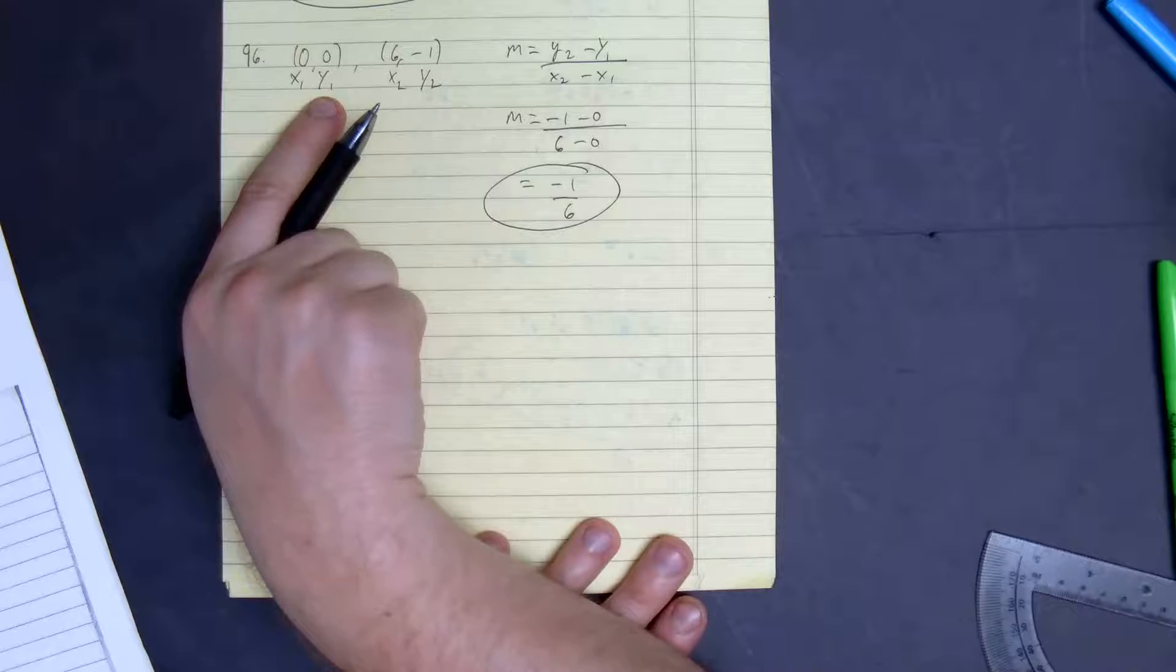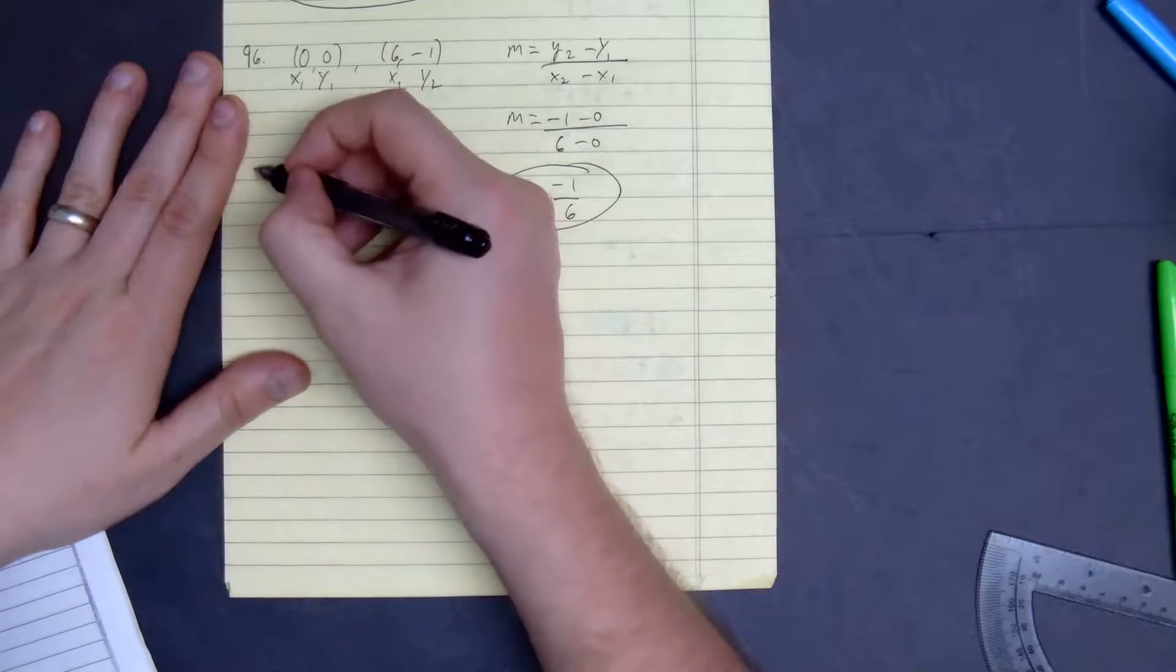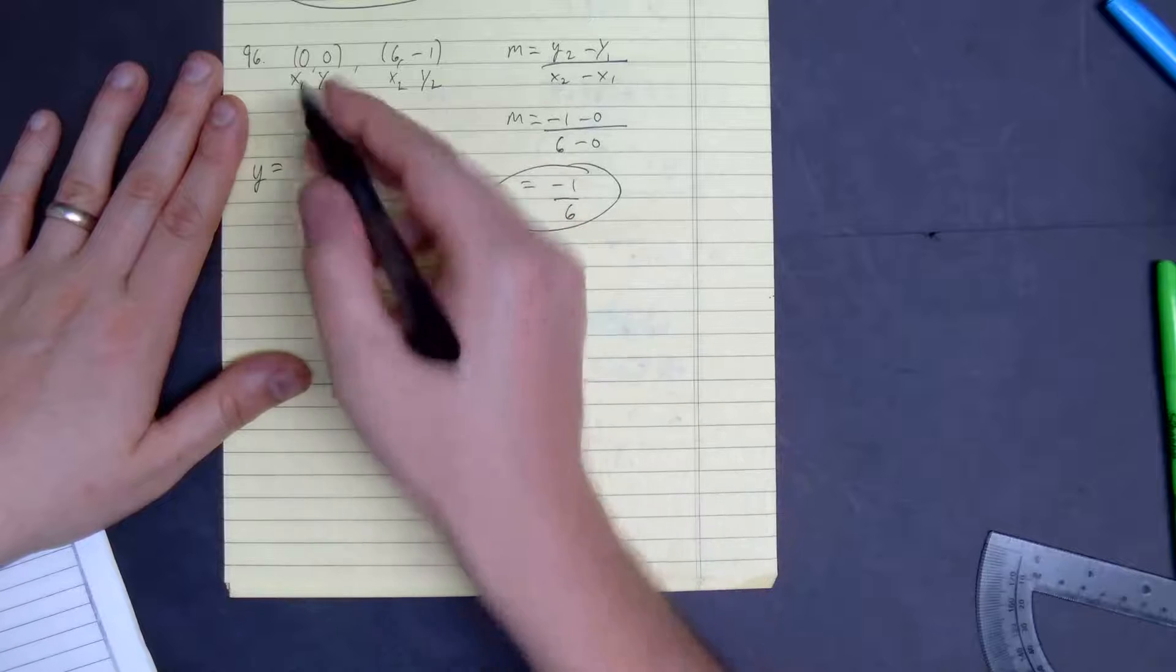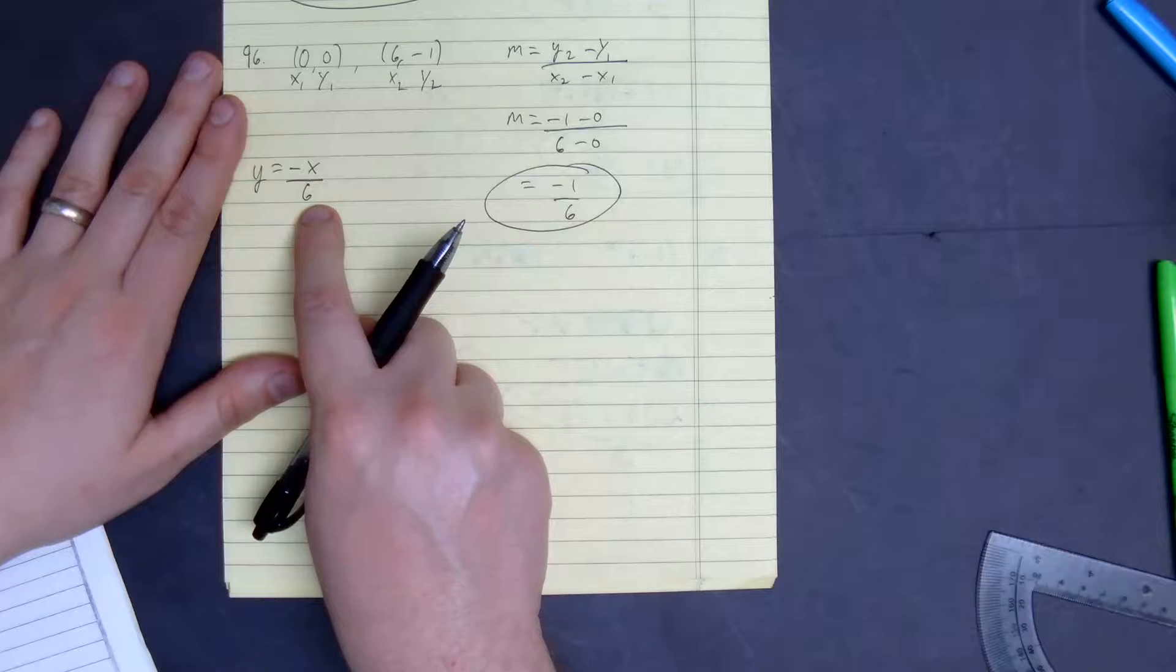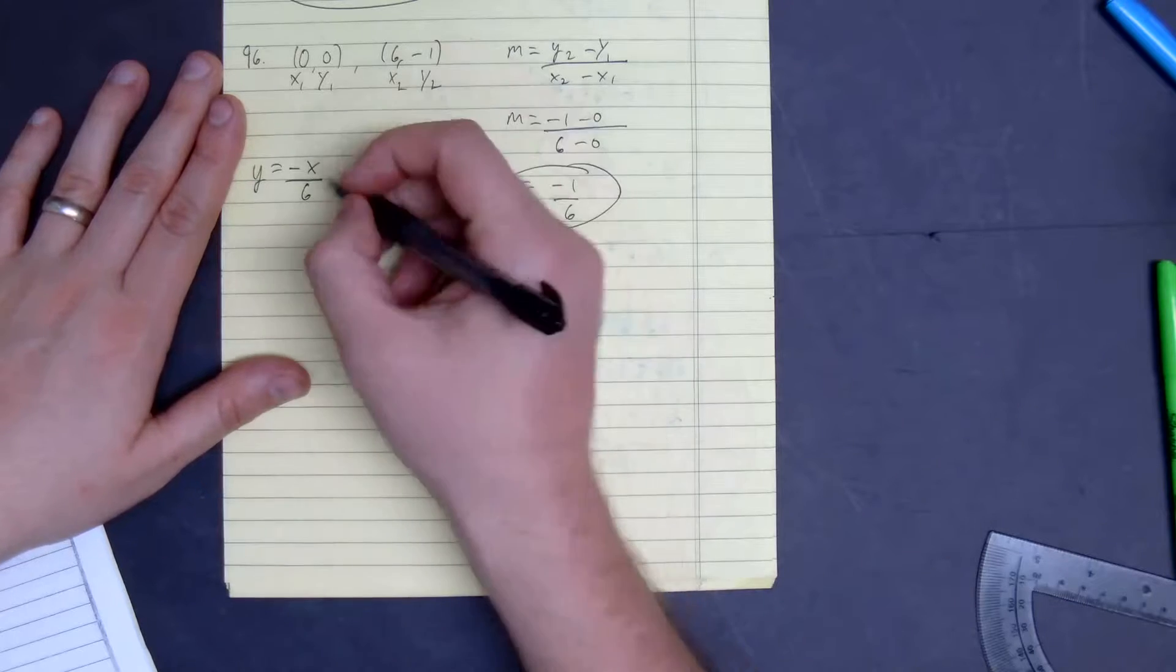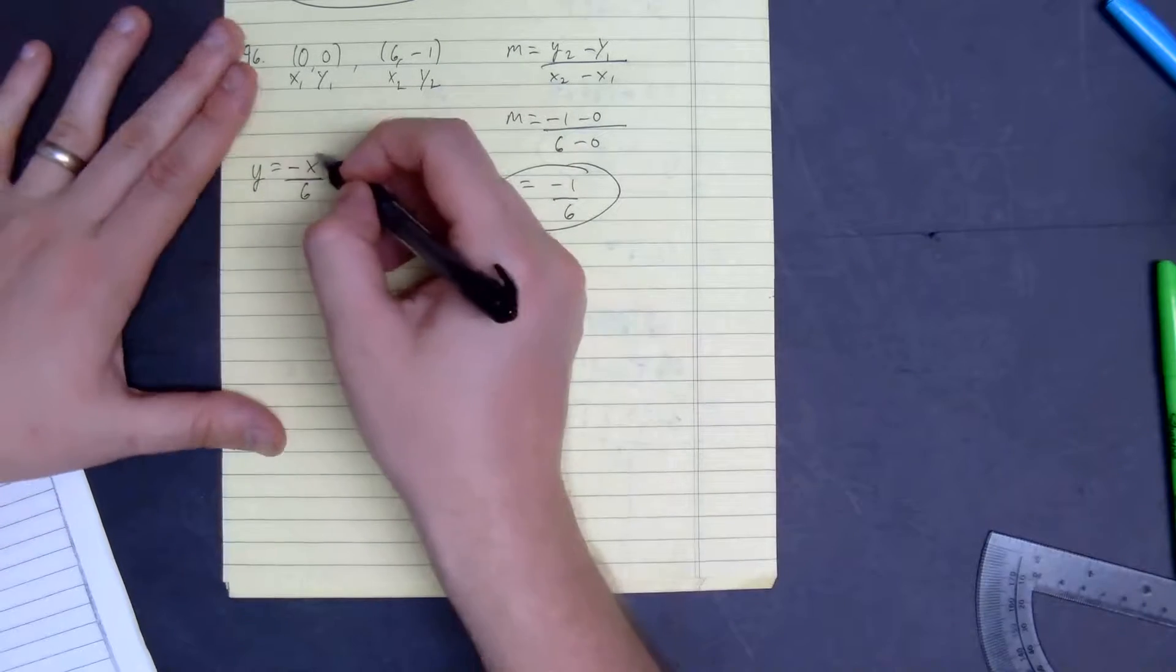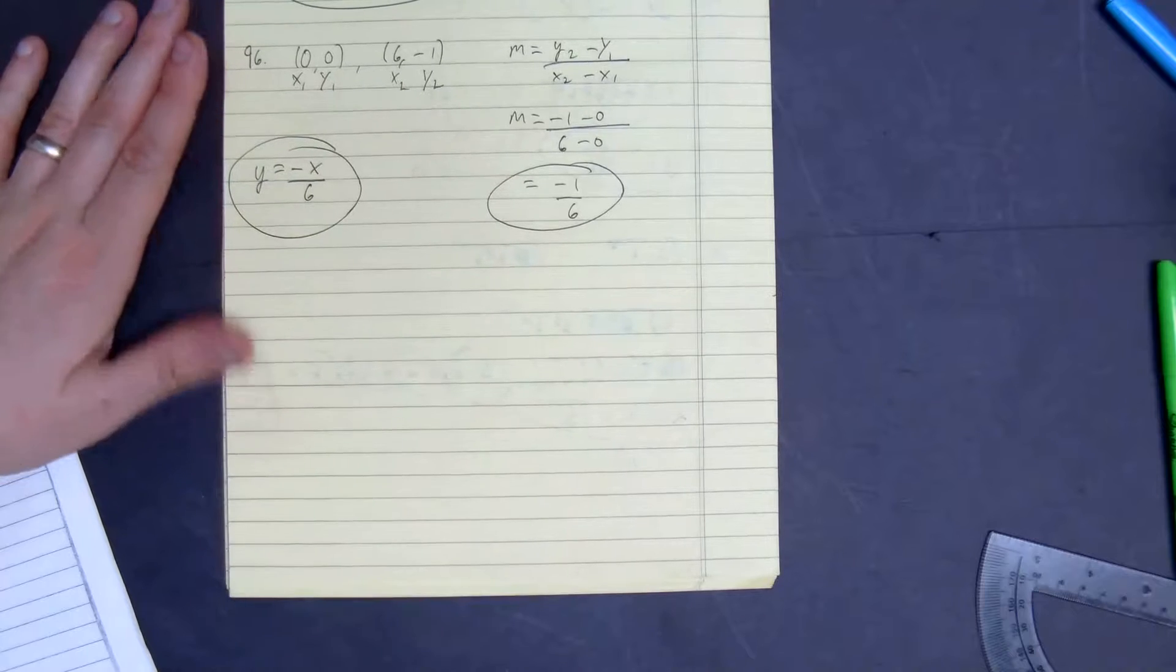So you just plug this into the slope-intercept form, which would be y is equal to negative 1/6x plus 0. You don't even need to write it. So this is your equation for number 96.